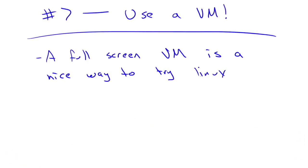Number 7: use a virtual machine. If you've used a virtual machine, you know it's easy to spin up and delete VMs. Every operating system on your desktop or laptop will have some sort of VM system you can download, whether it's VirtualBox or a commercial one. Put it full screen and it's going to be just like booting from a live CD, but you won't even have to reboot your computer. Virtual machines are a great way to try Linux.